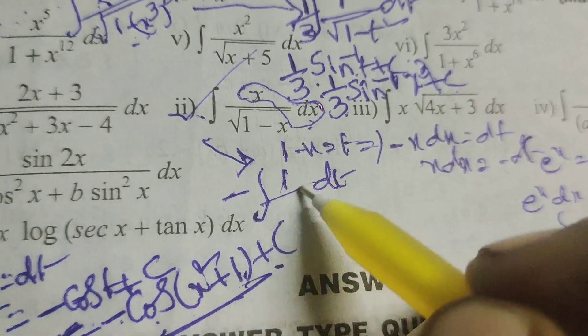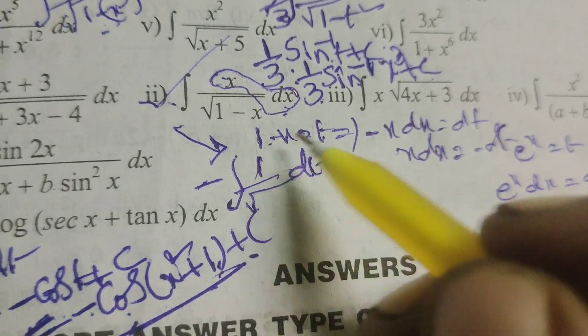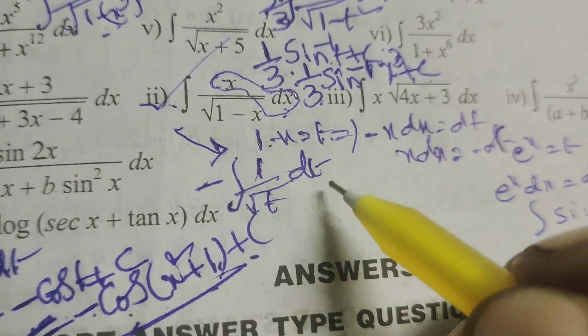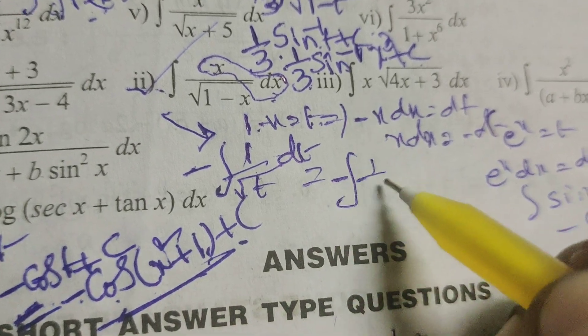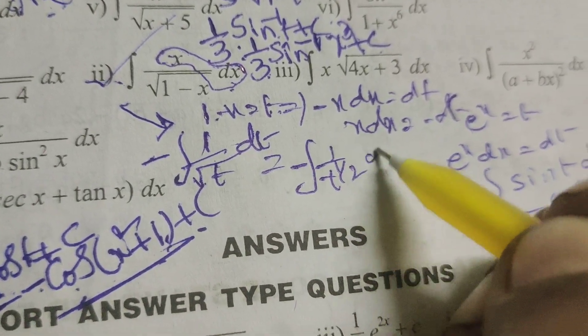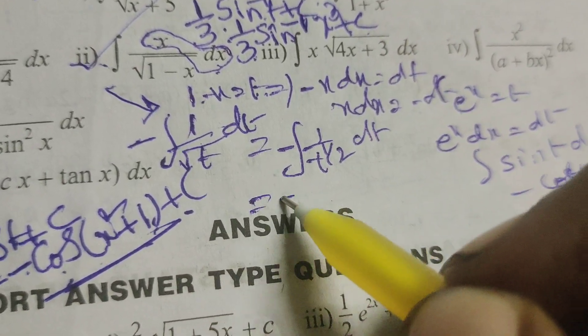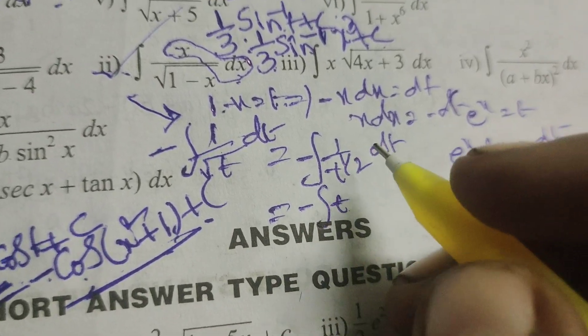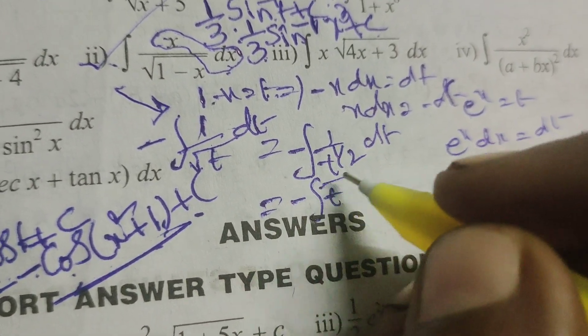And 1 by root of 1 minus x means t. Next, write minus integral of 1 by t power 1 by 2 dt. Next write minus integral of t power minus 1 by 2 dt.